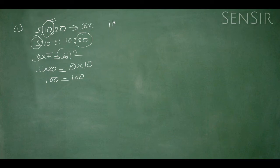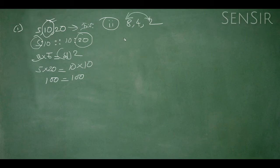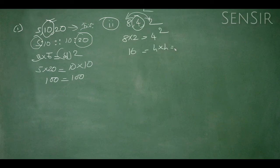Now look at the two numbers: 8, 4, 2. This is 8 into 2, so this is 4 squared — that is 4 into 4. So this is chromic path.